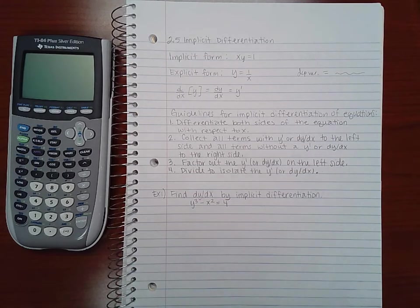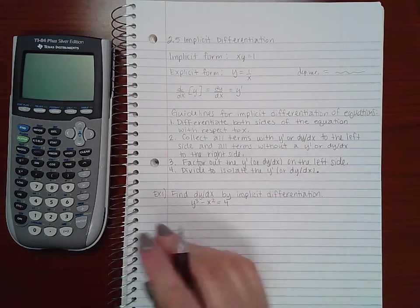As far as the product rules, chain rules, and quotient rules, if the functions have a y or an x, you treat them as a product or a quotient. And the chain rule should always apply - if your base or your argument or your angle is not just an x, you should be applying that chain rule. Let's go ahead and do this.